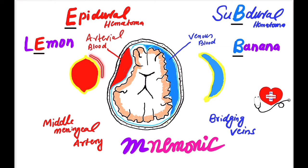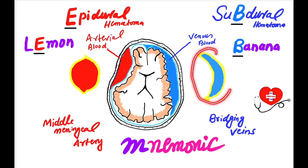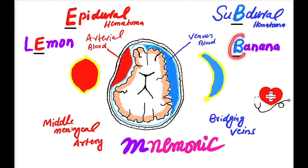And this is the blue colored banana that is filled with venous blood. This banana is crescent shaped with a concavity, like that of subdural hematoma. The word 'subdural' has the alphabet B, and 'banana' also has a B. So by remembering this mnemonic — subdural = banana, concave, filled with venous blood — you can easily remember the difference between epidural hematoma and subdural hematoma.